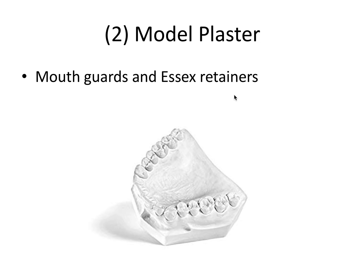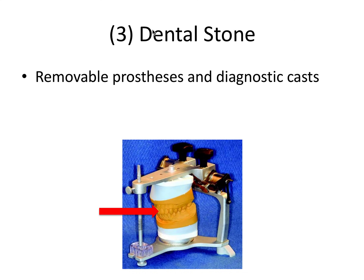Type two gypsum is model plaster, which is used to make casts for fabricating mouth guards and Essix retainers — those clear plastic retainers used following orthodontic treatment. Type three gypsum is dental stone, and this is the stone used to create mounted casts. It can be used for diagnostic casts for orthodontics, complex operative, fixed prosthetics, and removable prostheses can also be made using this stone to create a diagnostic or working cast.